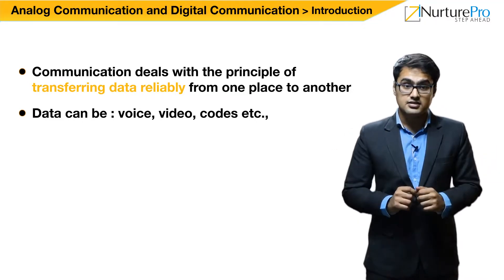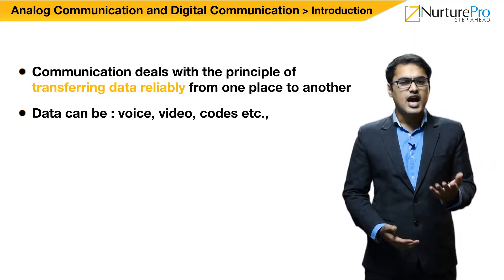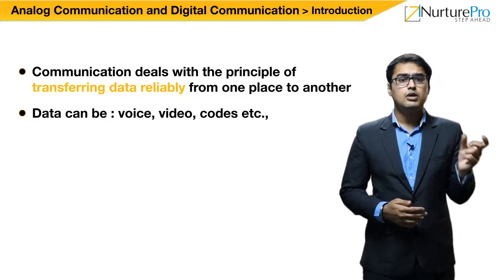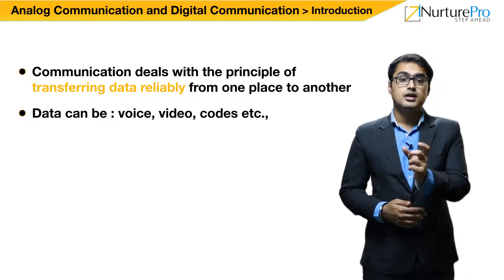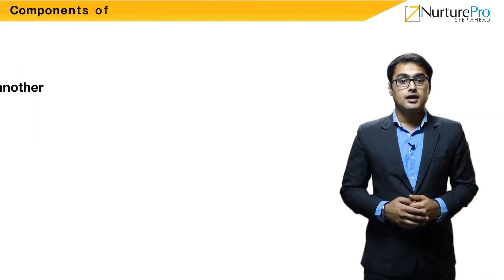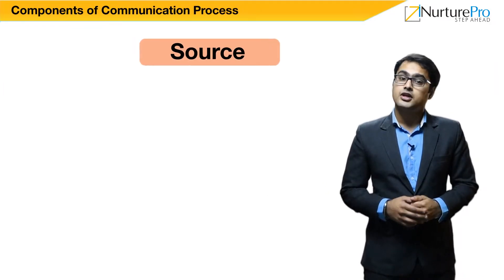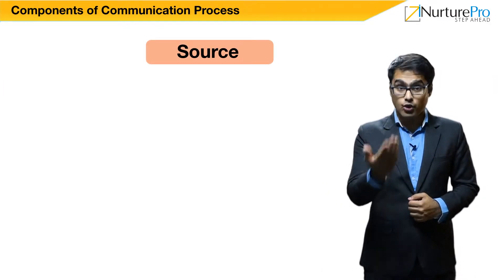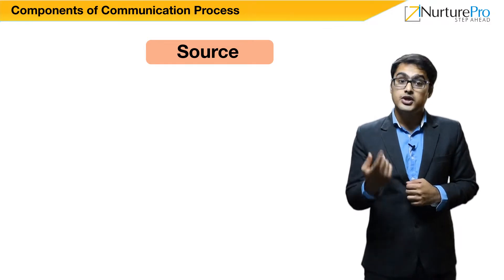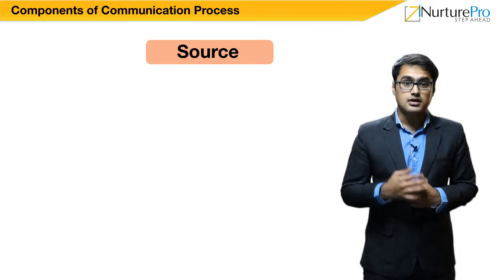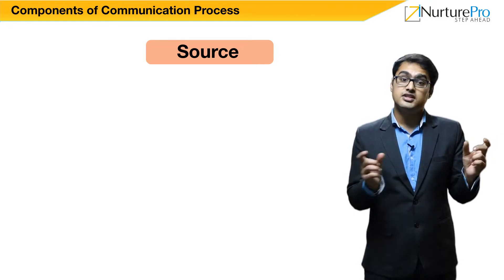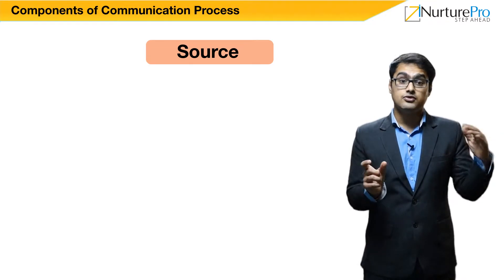Let's see how this process takes place. Communication deals in transferring data from one place to the other. The source of data could be human voice, data storage device, CD, video, etc. This source of data is transmitted from the source to the destination in the form of signals.